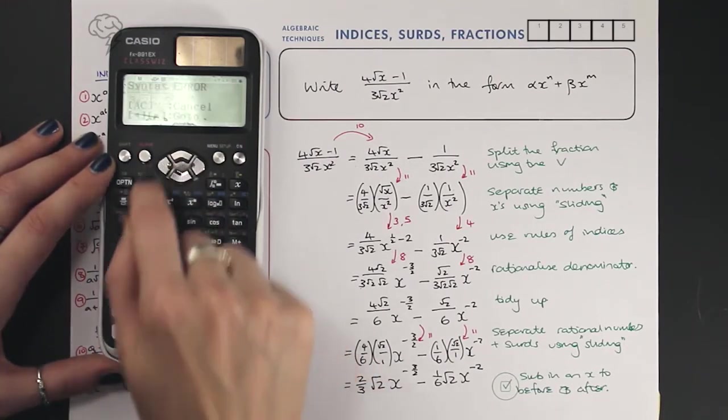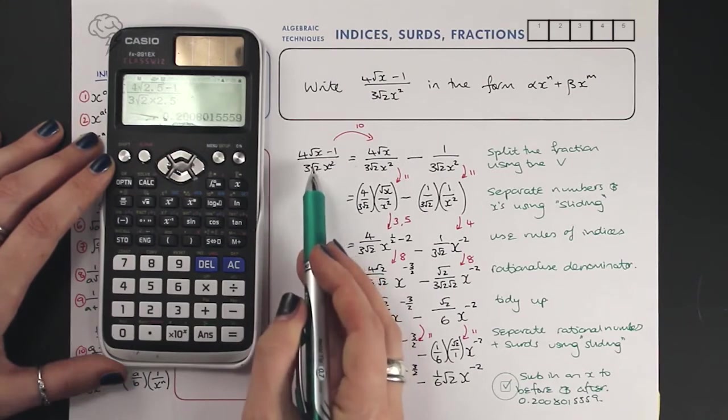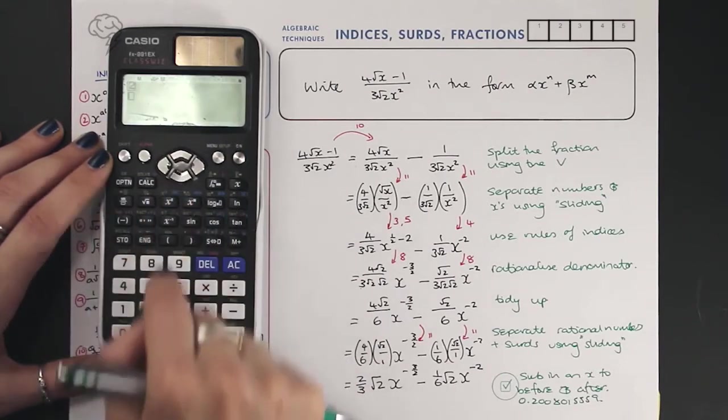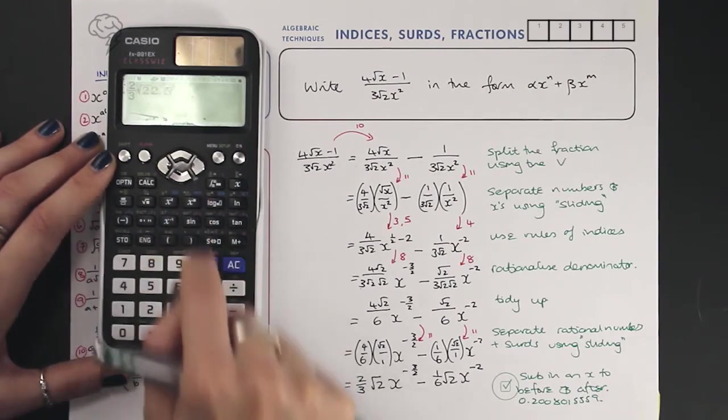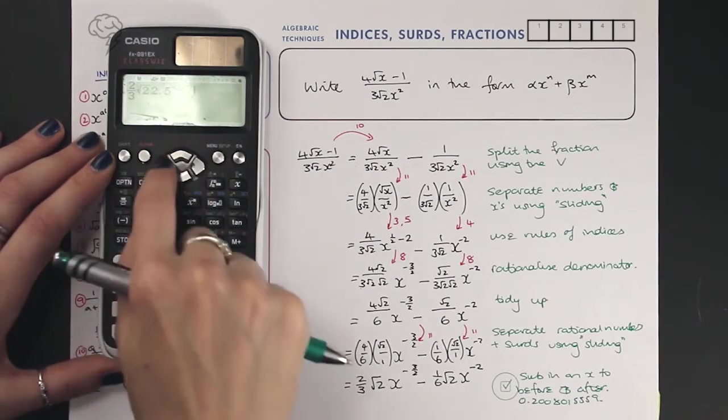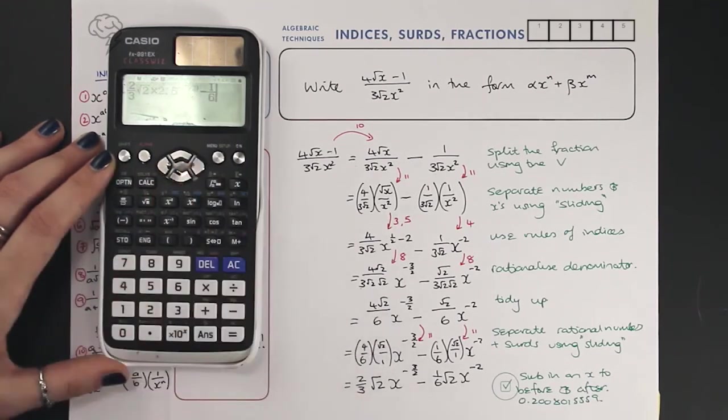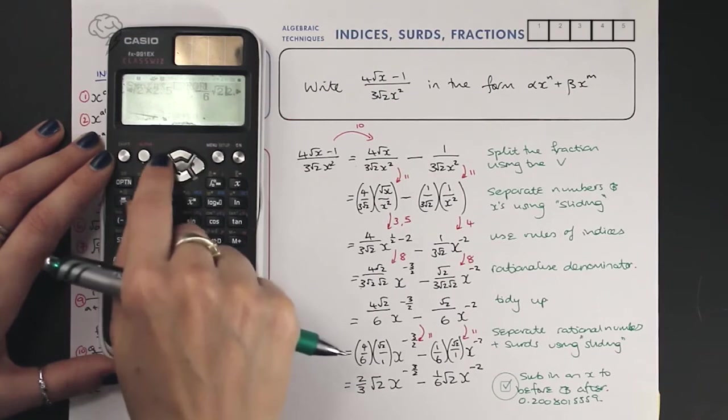That is 2.5 squared, comes out to be... didn't put a times in, that's what's wrong. There we go. So this is 0.2008015559. What happens if I put that same x in here? Obviously it should come out the same. So we've got two thirds - and this takes two seconds, it's a really easy way to check. I need a times in there, don't I. Fingers crossed, times.